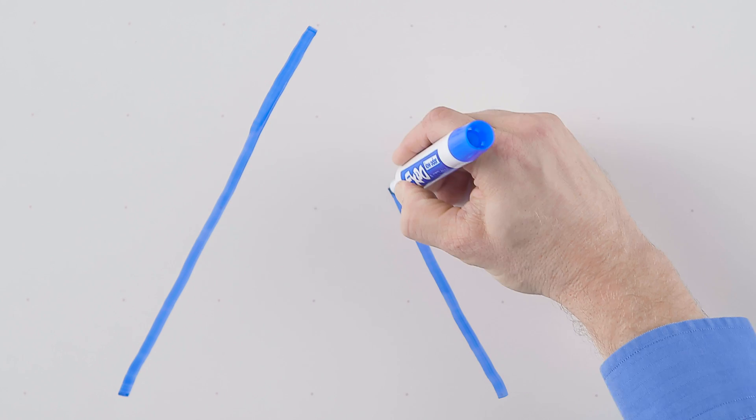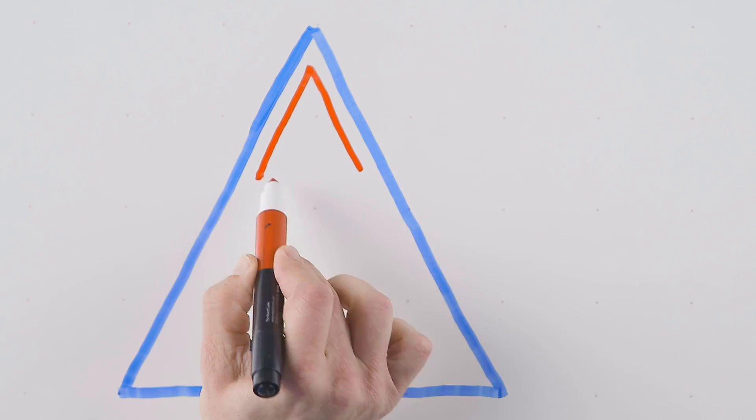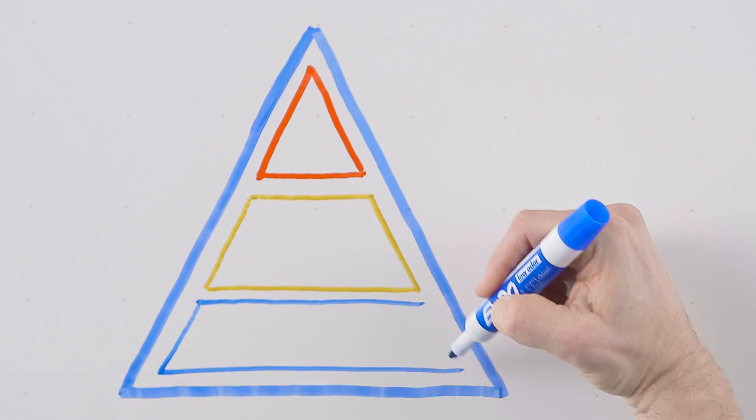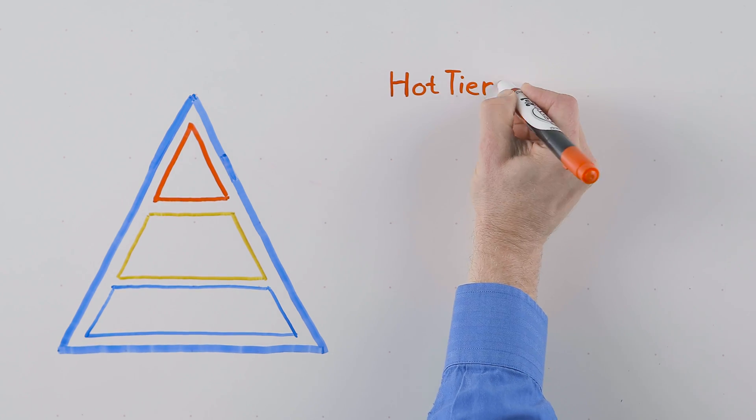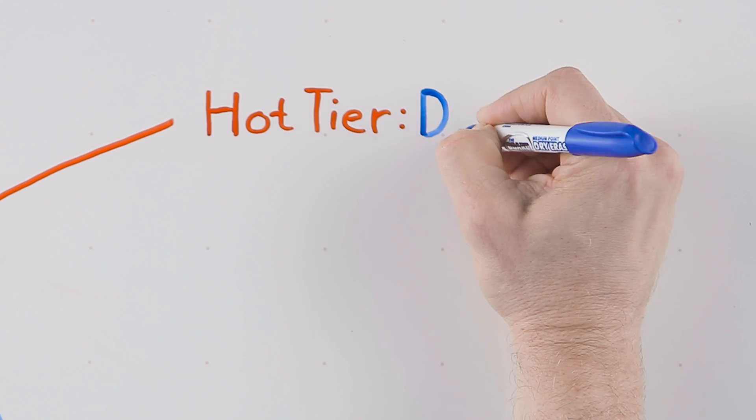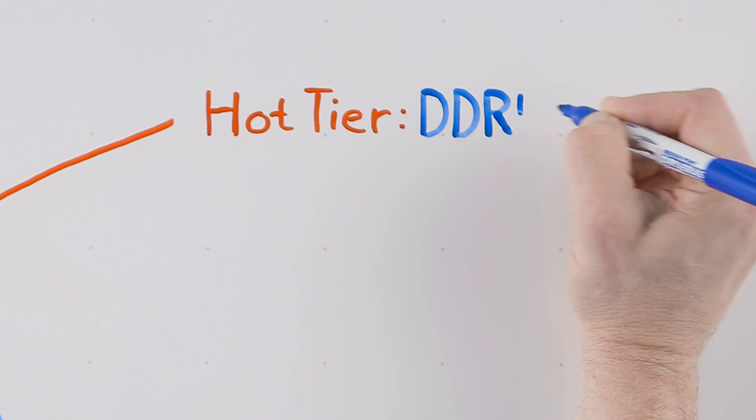No single technology is able to deliver that, so the industry has evolved to a tiered model, a pyramid if you will. The hot tier is where you need to put your most frequently used data. The technology in the hot tier tends to be DDR DRAM memory.